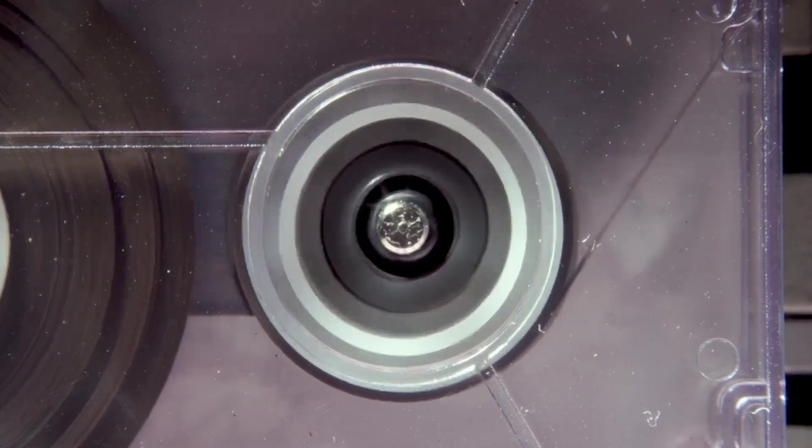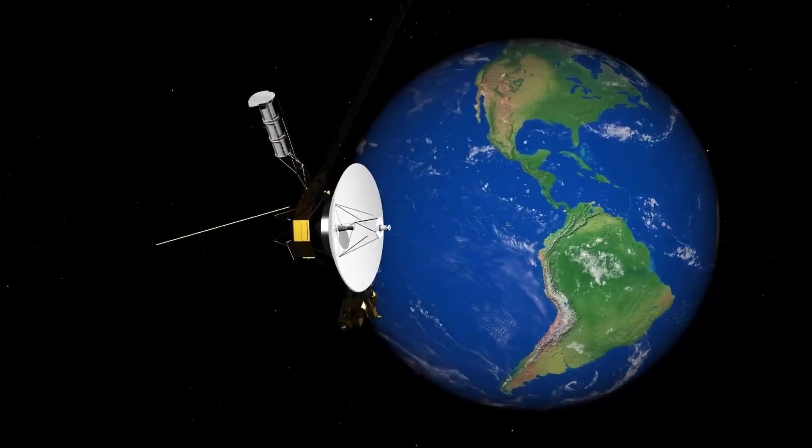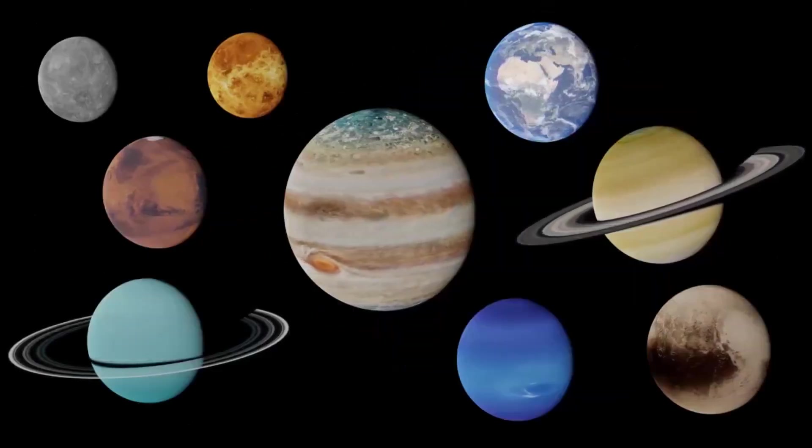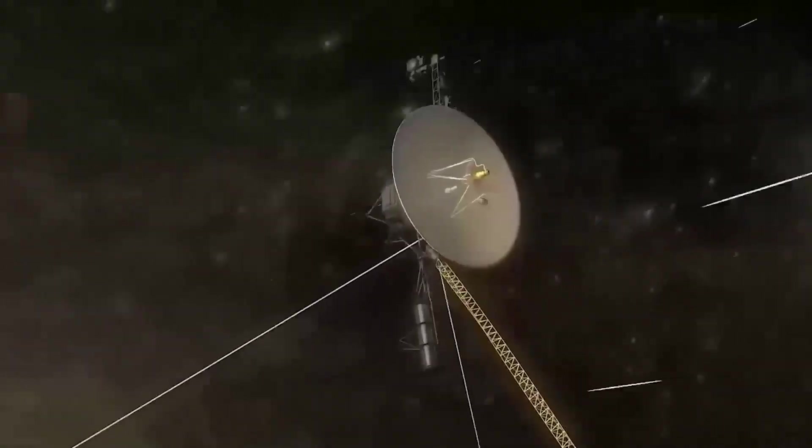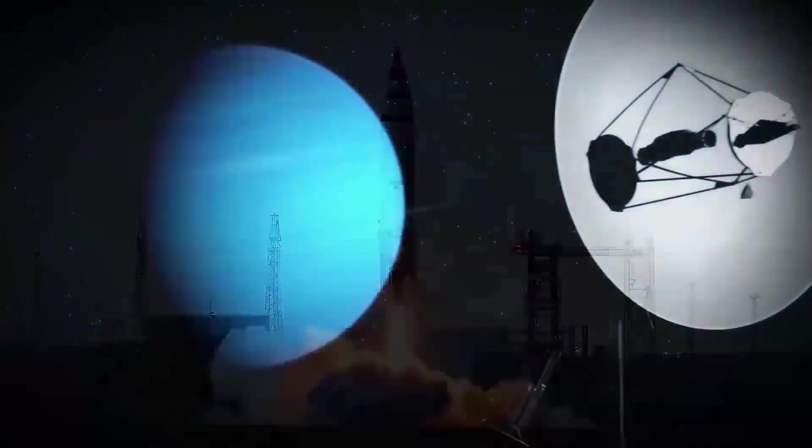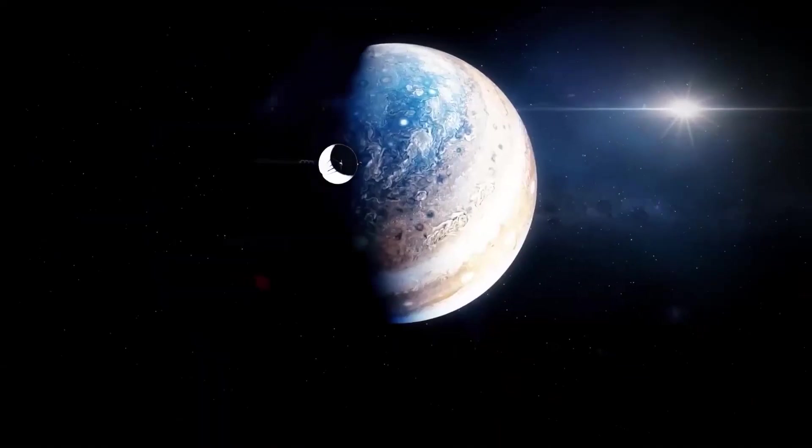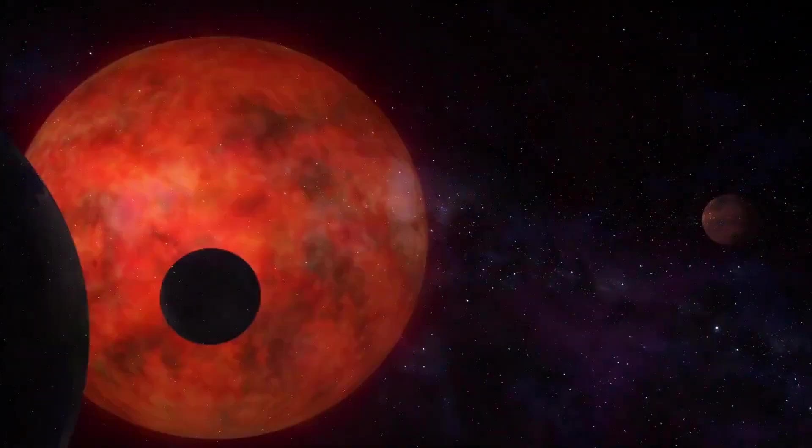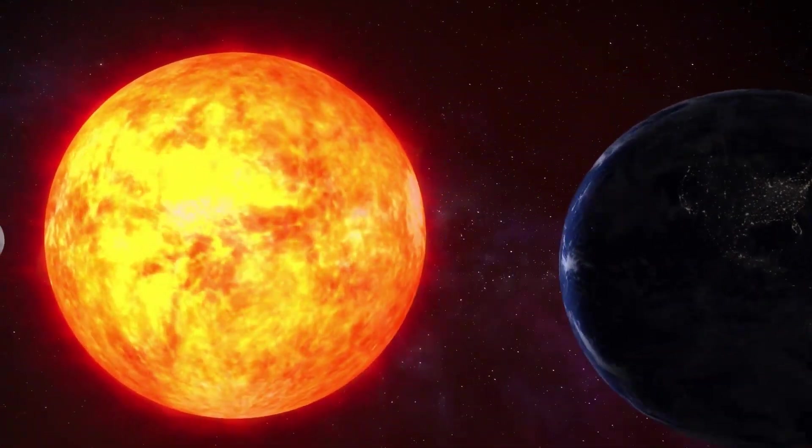Voyager 2 also discovered Neptune's peculiar magnetic field, tilted and offset from its center, challenging existing models of planetary magnetism. Designed to last just five years, Voyager 2 has exceeded all expectations, continuing to send back data over four decades later. Its endurance is a testament to the ingenuity and craftsmanship of the engineers who built it.